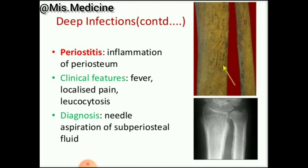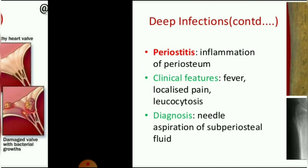Periosteitis is inflammation of the periosteum of the bone. Clinical features are fever, localized pain, and leukocytosis. It can be diagnosed by needle aspiration of subperiosteal fluid.